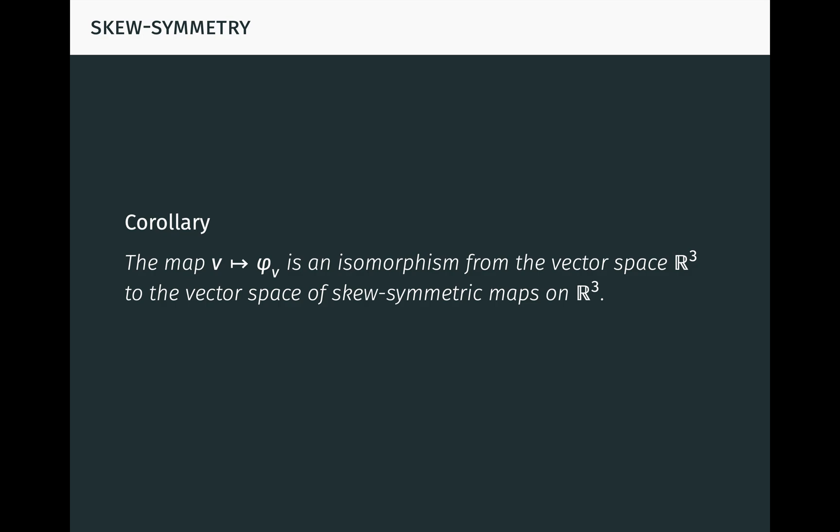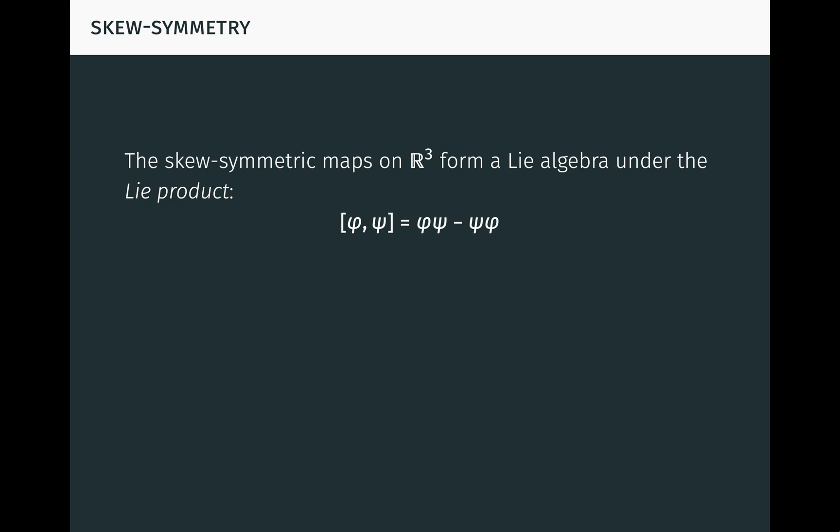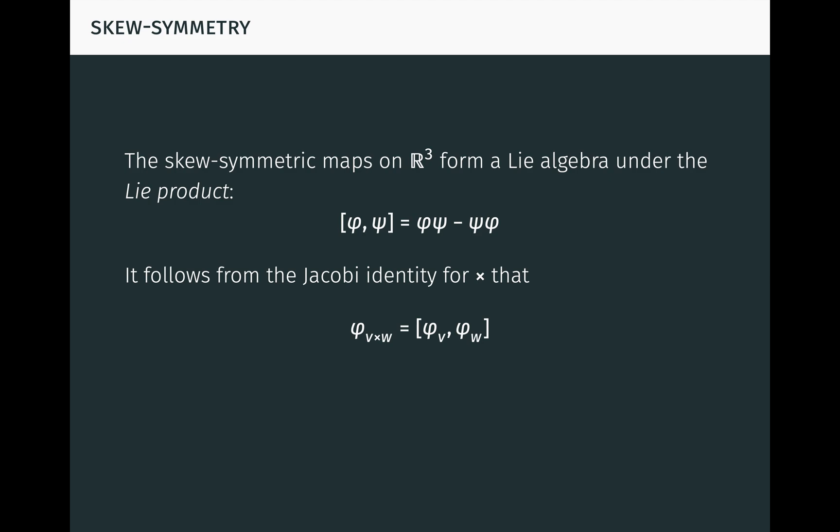It follows from this theorem that the map which sends a vector v to the map phi v is an isomorphism from the vector space R3 to the vector space of skew symmetric maps on R3. But more is true. The skew symmetric maps on R3 themselves form a Lie algebra under the Lie product, where phi times psi equals the composite phi after psi minus the composite psi after phi. You can easily verify yourself that this product preserves skew symmetry and is bilinear, anticommutative, and satisfies the Jacobi identity. It follows from the Jacobi identity for the cross product that phi v cross w equals the Lie product phi v times phi w. So the map which sends v to phi v is actually an isomorphism of Lie algebras. We'll return to this in a moment when we consider generalizations of the cross product.